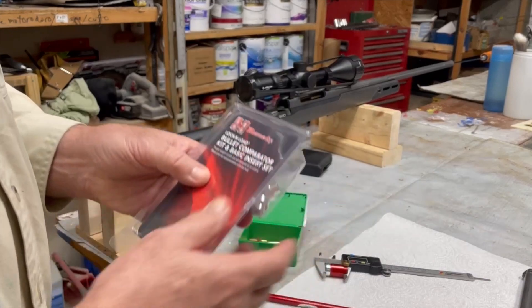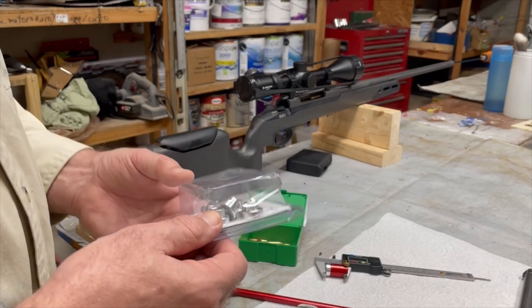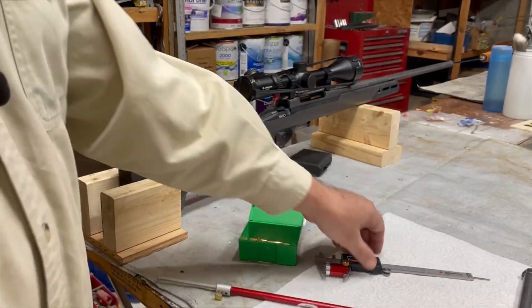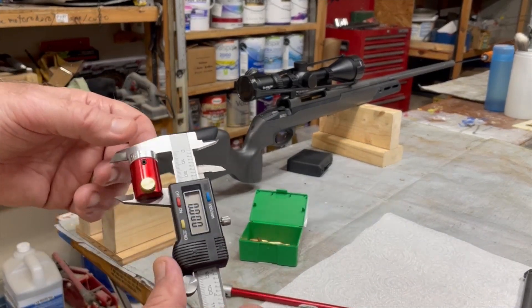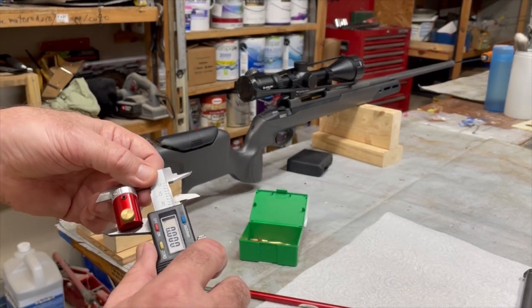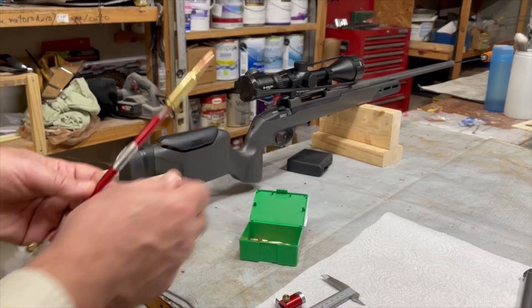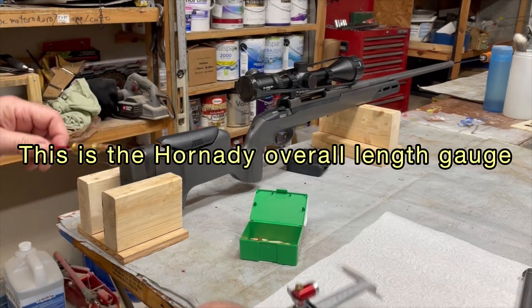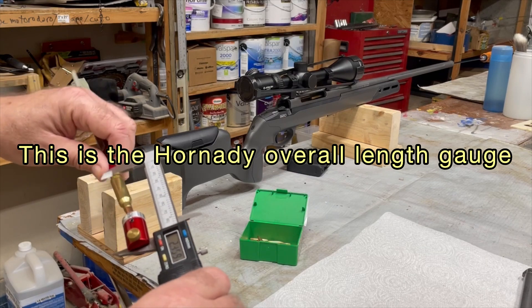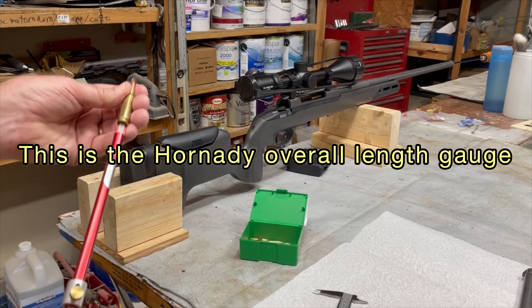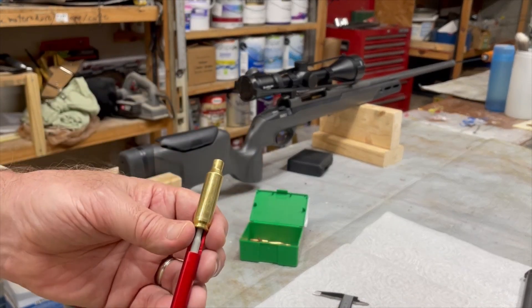We have the Hornady Comparator set, and this has bushings for a number of different rifle calibers. I have set the bushings for the 6.5 Creedmoor onto the caliper. What we'll do is loosen this rod, let this bullet fall down inside of the case, like that.